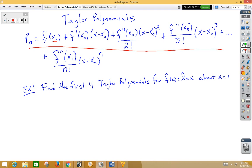Pay attention to the fact that when you get to the second derivative, you're at 2 factorial, third derivative 3 factorial, and so on. So let's go ahead and find the first four Taylor polynomials for the natural log of x about x is 1.